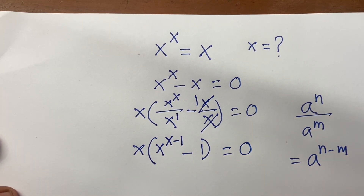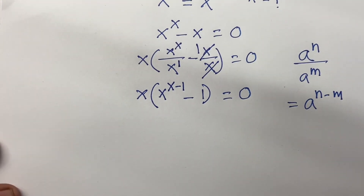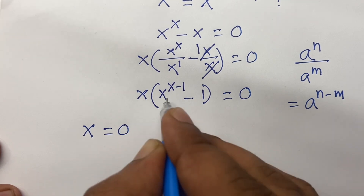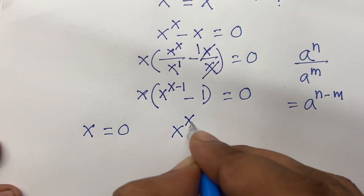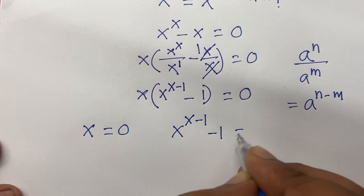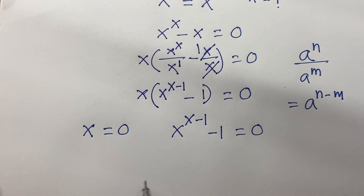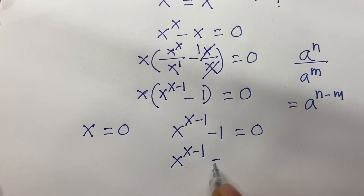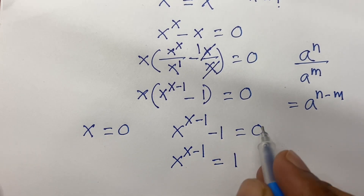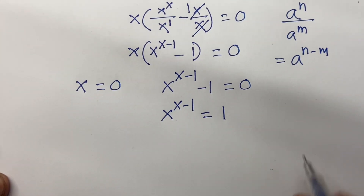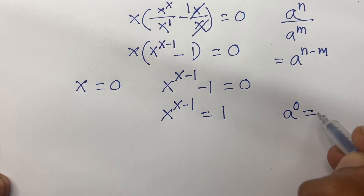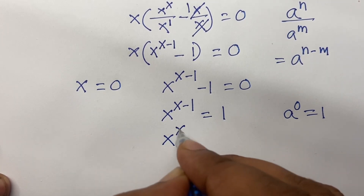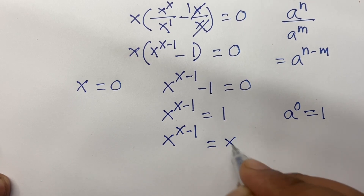Now here are two cases. First case, x equal to 0. In the other case, x to the power x minus 1, minus 1, equal to 0. Now this is x to the power x minus 1 equal to 1. I just change the place, and we know that a to the power 0 equals 1. So if I follow these rules in this line, I can say x to the power x minus 1 equal to x to the power 0.